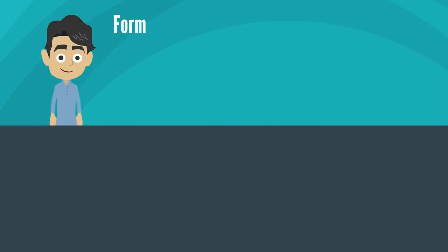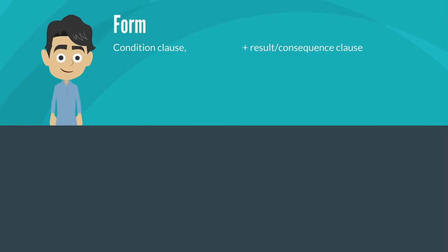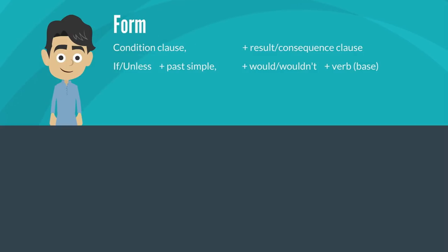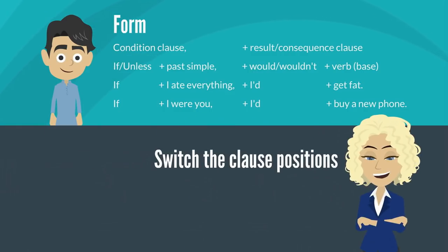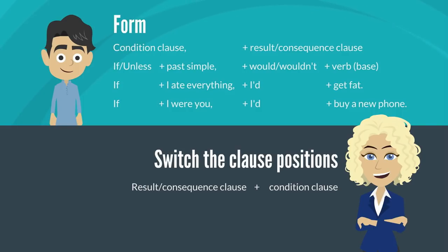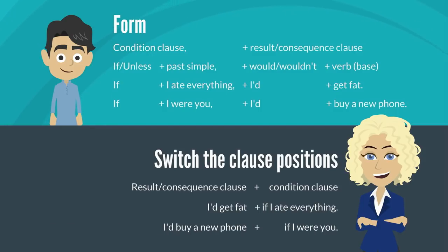The form of the second conditional is: condition clause, comma, plus result or consequence clause. The condition clause is 'if' or 'unless' plus past simple. The result or consequence clause is 'would' or 'wouldn't' plus verb in the base form. For example: 'If I ate everything, I'd get fat.' 'If I were you, I'd buy a new phone.' We can also switch the positions of the clauses — result clause plus condition clause — and notice that there is no comma when the clause positions are switched. For example: 'I'd get fat if I ate everything.' 'I'd buy a new phone if I were you.'